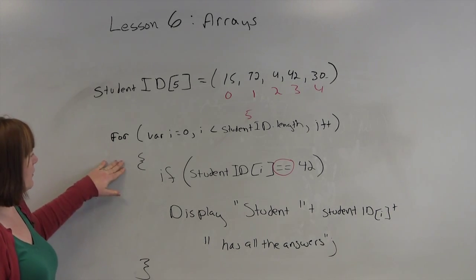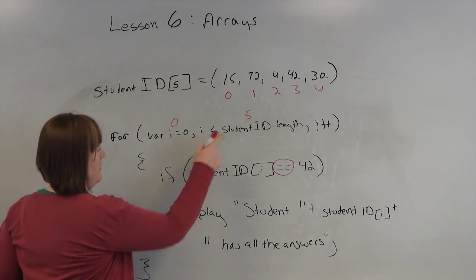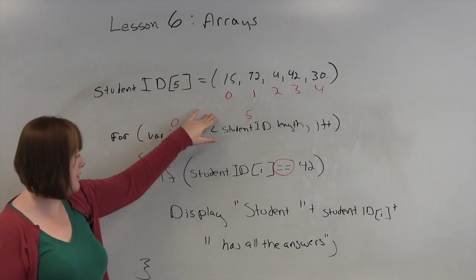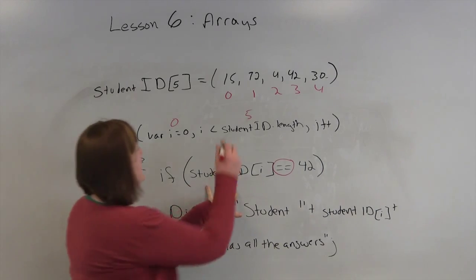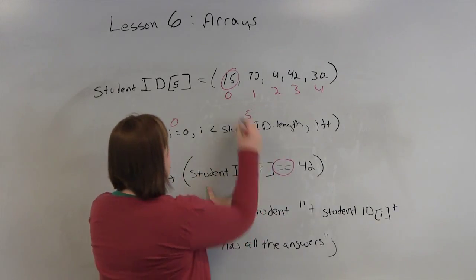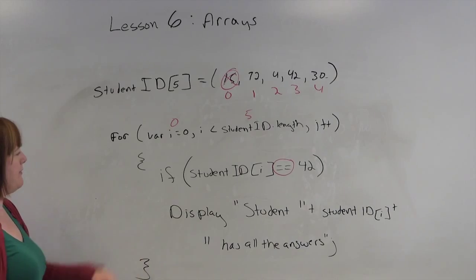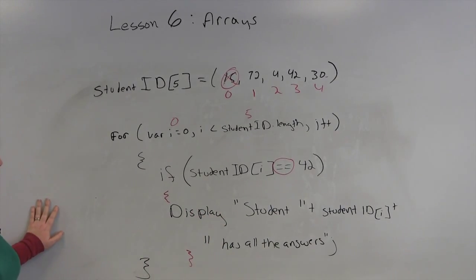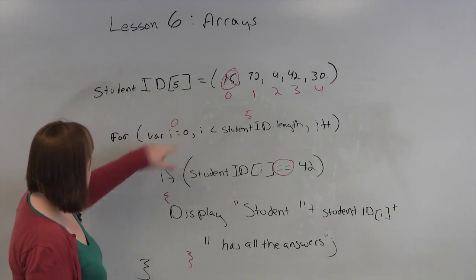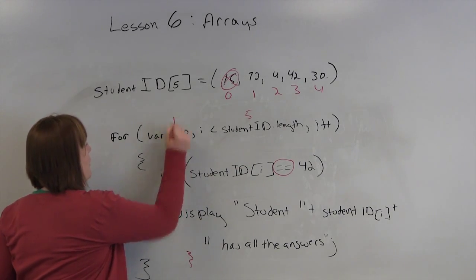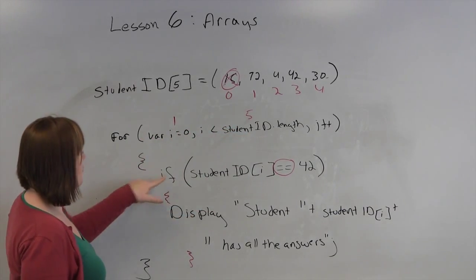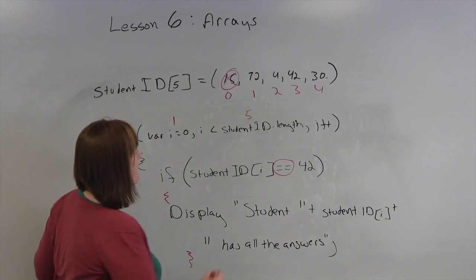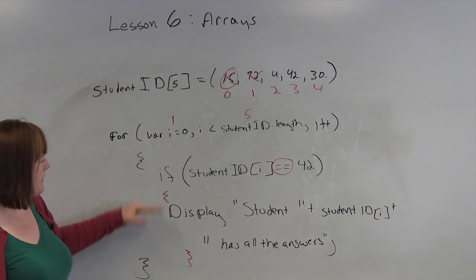First time we walk through, variable i is 0. Studentid length is 5. We haven't gone to i++. Is 0 less than 5? Yes, it is. So we're going to compare studentid i, that's 15, to 42. Are they the same? No. Nothing happens. Because this is an if statement. And we really should have brackets here though. If it's just a single statement, it will run just one statement. It doesn't need to be in brackets. So we increment i. So variable i is now equal to 1. 1 is less than 5. So we'll do a comparison. Studentid i, 1, that's 72, is not equal to 42. Nothing happens. Because it's an if statement. We increment i.